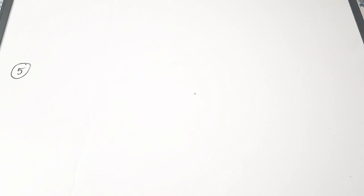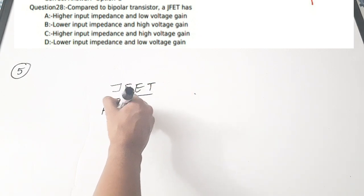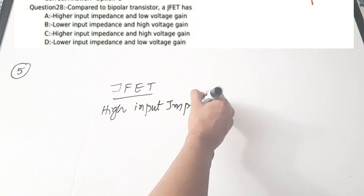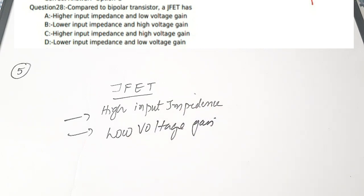Fifth question: compared to a bipolar transistor, a JFET has — A) higher input impedance and lower voltage gain, B) lower input impedance and high voltage gain, C) higher input impedance and high voltage gain, D) lower input impedance and low voltage gain. A JFET is more noise resistant, has higher input impedance, but lower voltage gain compared to a BJT. Correct answer is option A.